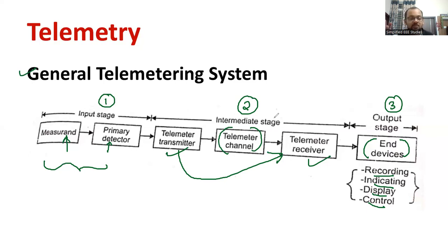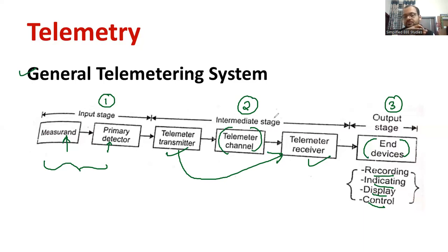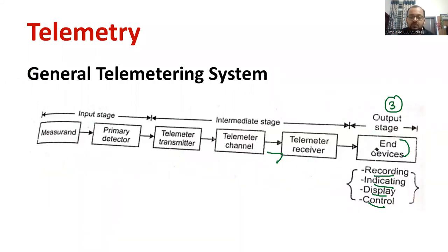We have three stages to explain individually. The first stage is the basic stage, where your sensors or transducers and a primary detector will be present. The second intermediate stage is very important — it comprises of a telemetry transmitter, a suitable channel, and a telemetry receiver. The intermediate stage determines how far your sensors or transducers are located from your place as a user. The output stage is where you can process the data and convert it into suitable information. In the context of measurement, signal transmission is essentially a telemetry system.